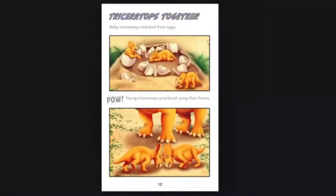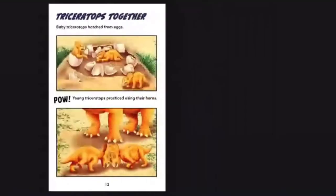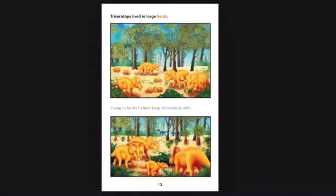Triceratops together. Baby Triceratops hatched from eggs. Young Triceratops practiced using their horns. Triceratops lived in large herds. Living in herds helped keep Triceratops safe.